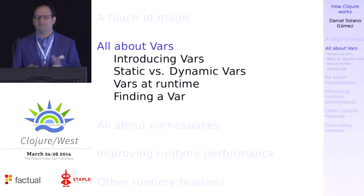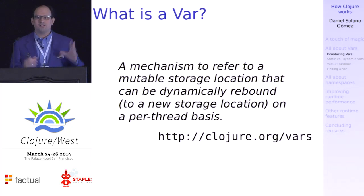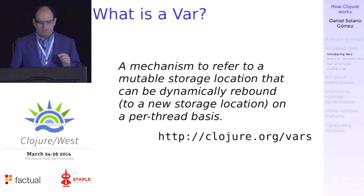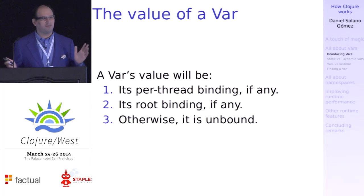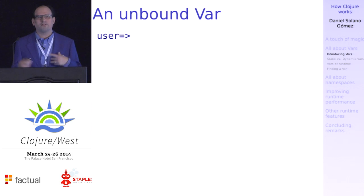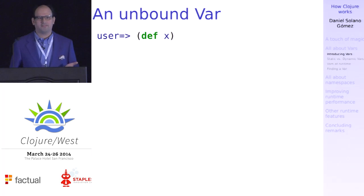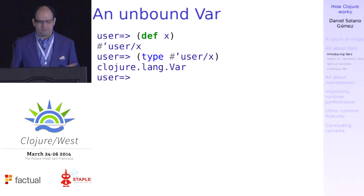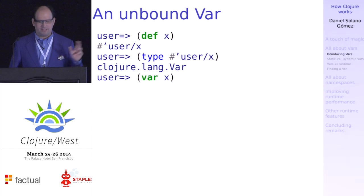So what are VARs? You use them all the time, but maybe you haven't really thought about them in detail. They were originally created as a mutable cell that can have thread-local values. These values can either be the thread-local value if there is one, or if not, it'll check for a root binding. And if there's none, it's just an unbound VAR. Creating an unbound VAR is simple — you just `def` whatever, and you get a VAR as a result, a `clojure.lang.Var`. The hash-quote syntax is just a shortcut for saying `var x`.